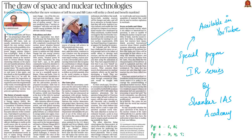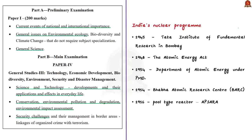India's nuclear program began before independence in 1945 with the establishment of the Tata Institute of Fundamental Research in Bombay. After independence, the Atomic Energy Act was passed in 1948 to govern India's nuclear aspirations, making clear that India's objective for atomic energy development is only for peaceful purposes. In 1954, the Government of India passed a resolution establishing the Department of Atomic Energy, charged with sole responsibility for all nuclear activities. Importantly, this department is not attached to any ministry but is directly under the Prime Minister's Office (PMO).